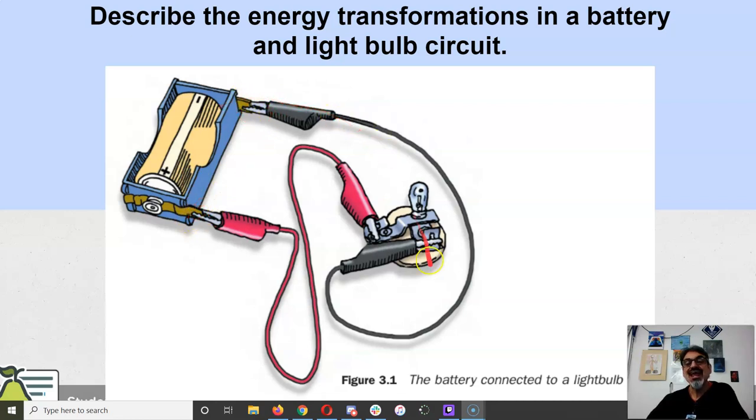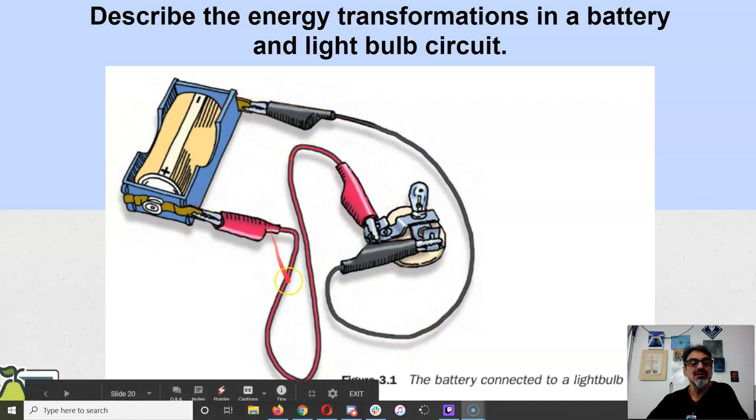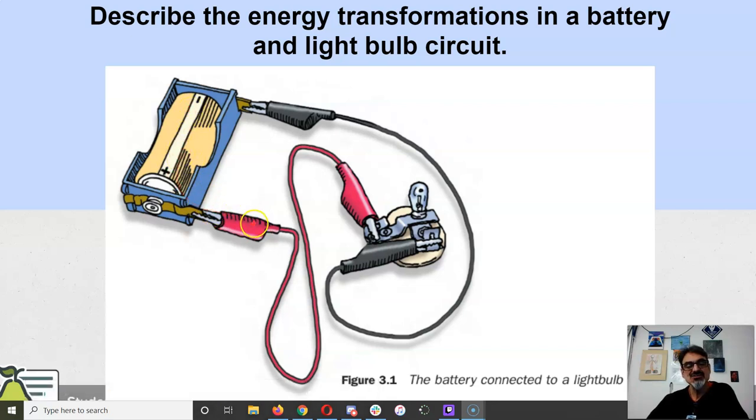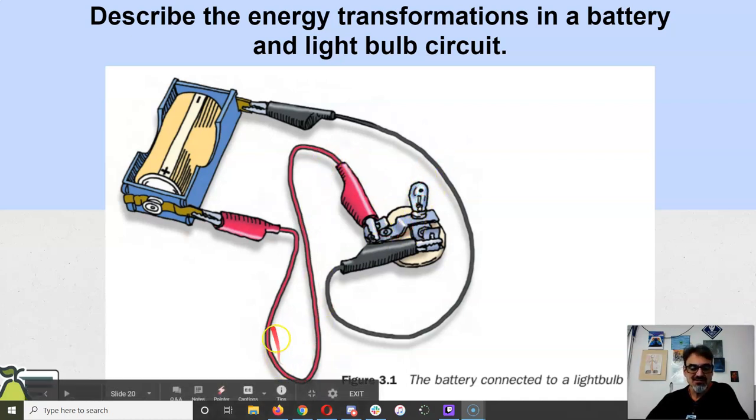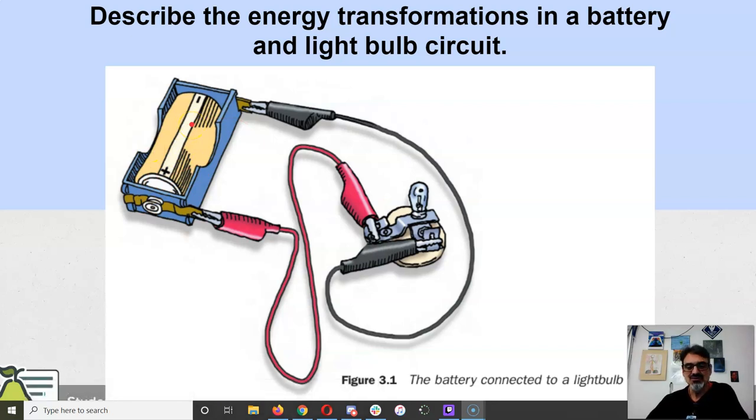Once you attach wires and make a complete circuit, the stored chemical energy changes into electrical energy coming out of the negative, going through into the light bulb where it changes into light energy and thermal energy, and then continues through into the positive, making a complete circuit until the battery runs out of stored chemical energy.